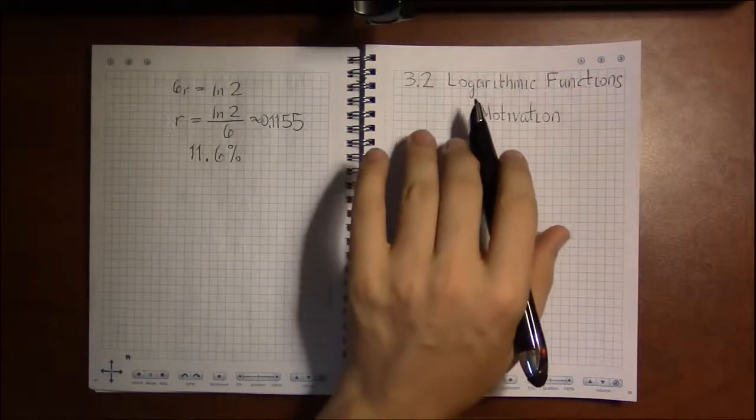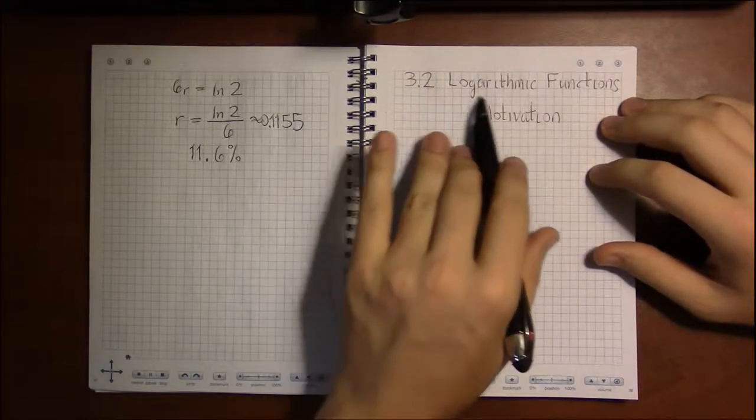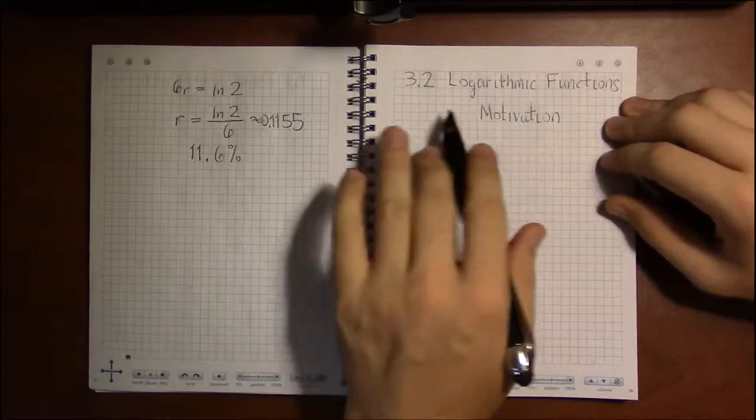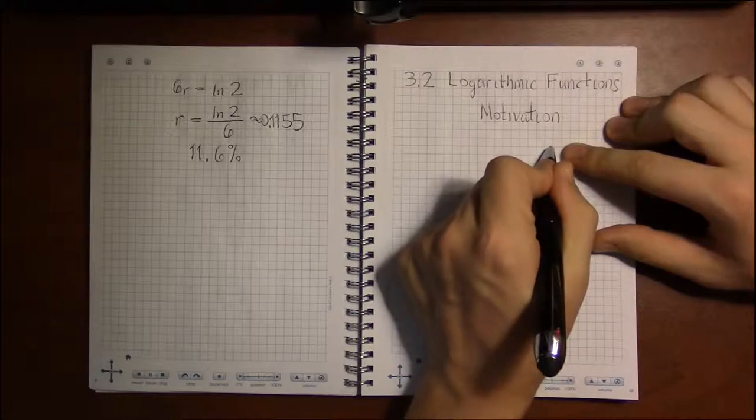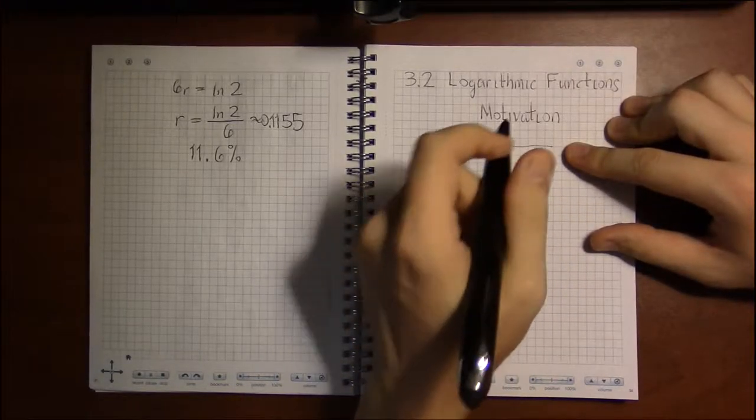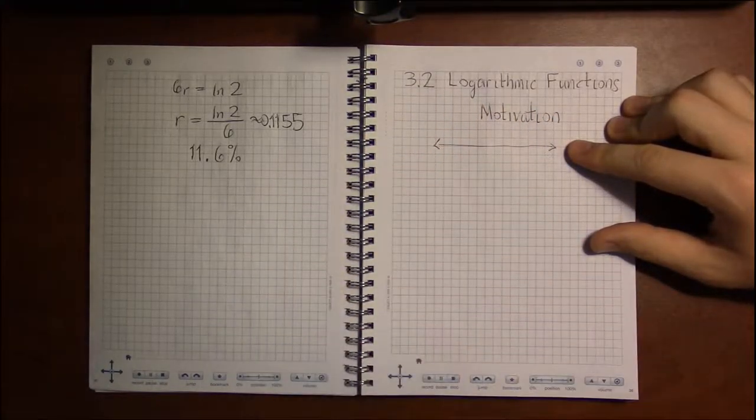Remember back early in chapter P when we were talking about how addition, subtraction, multiplication, division, and finally exponents could be represented as operations on the number line.